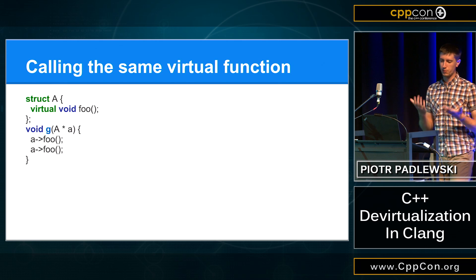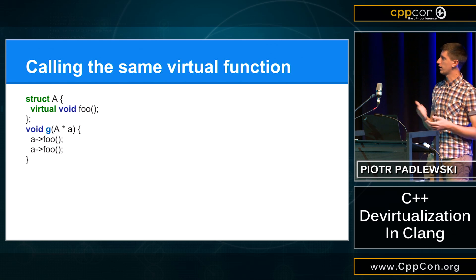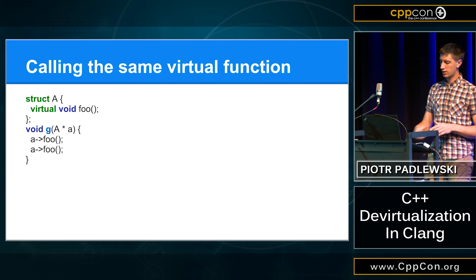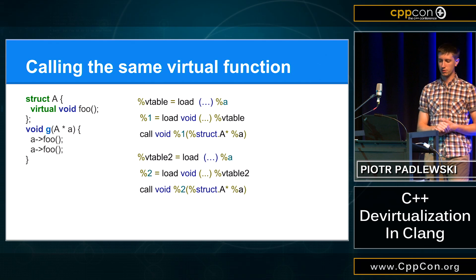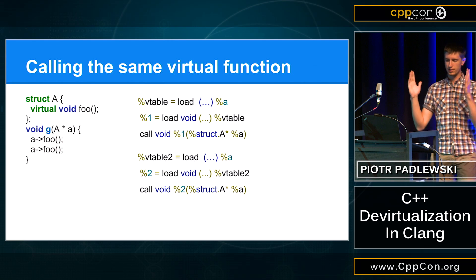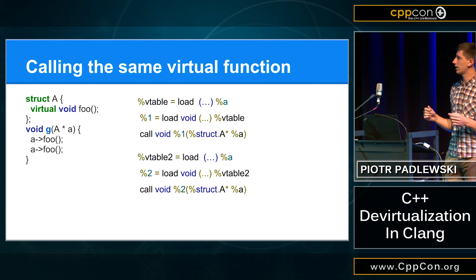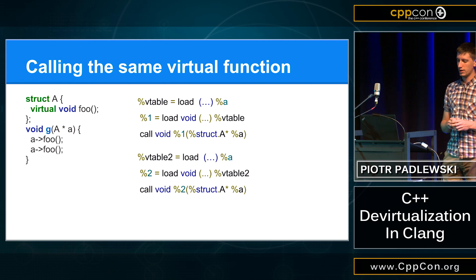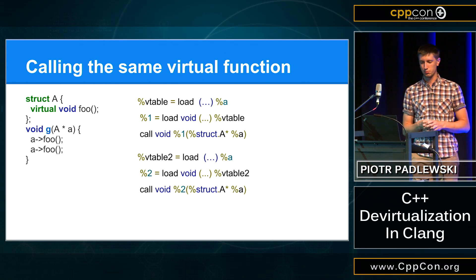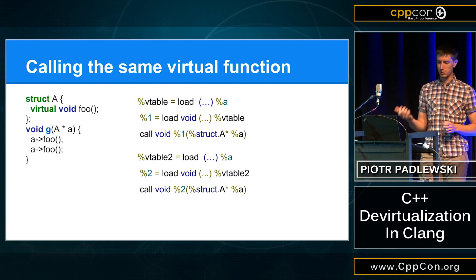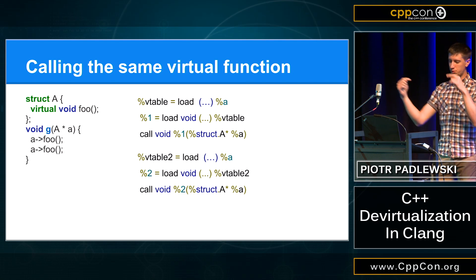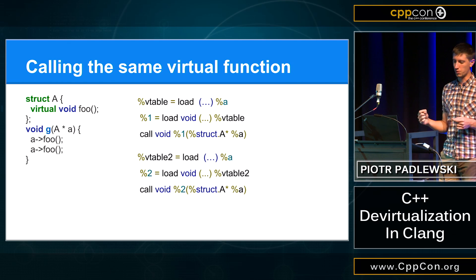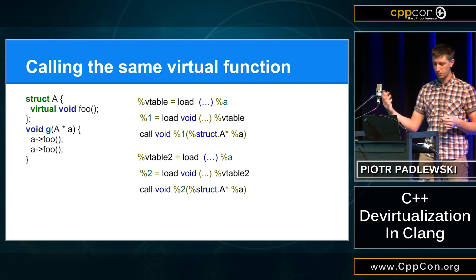So a basic fact: if you have two function calls, this will produce something like this — each function call will generate two loads and the call. This is something we would like to avoid, because we can assume that those two loads will load the same V pointer value.